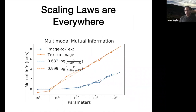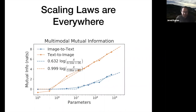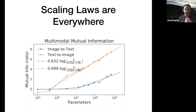Scaling laws appear in other quantities too. For a multimodal model trained to predict all pixels in an image given corresponding text, you can compute an empirical mutual information between text and image: take the loss when the model sees the text versus when it sees no text at all, and subtract. The model that gets to read the text consistently has a lower loss. This mutual information — which measures how much the text tells you about the image — grows smoothly and predictably with model size, showing that bigger models learn more about how words describe images.